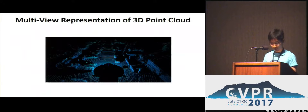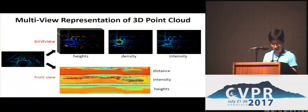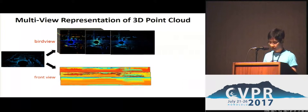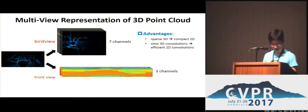Before feeding the 3D point cloud into the network, we first project it into the bird's eye view and the front view. Each view is encoded with some simple geometry features. By this means, the sparse 3D point cloud is converted to a more compact 2D geometry representation.